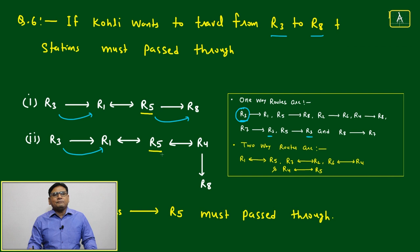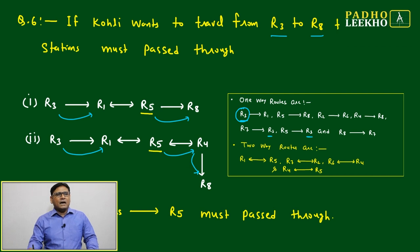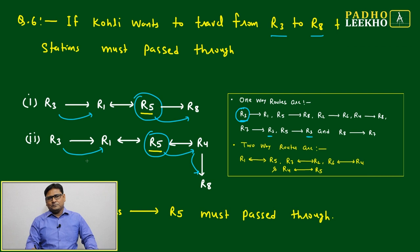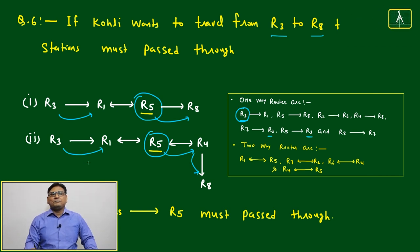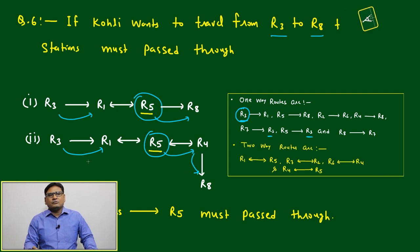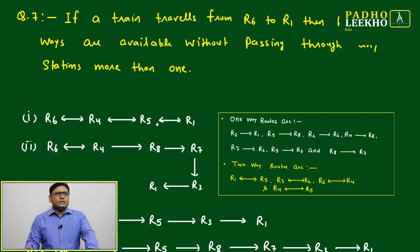From R1 you can take two different channels: either go to R5 and directly to R8, or go to R5 then take one more station R4 and reach R8. In both cases, R5 must be crossed — you cannot avoid it. Your train must pass through station R5.